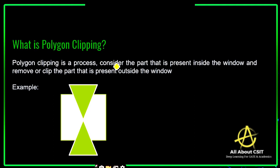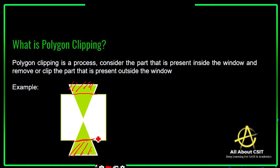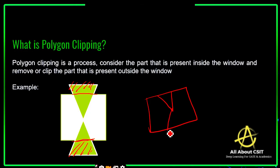Polygon clipping is a process to consider the part that is present inside the window and remove or clip the part that is present outside the window. We need to select only the part inside the window and clip the rest. The part inside the window is accepted, and the polygon present outside the window is clipped. This is the concept of polygon clipping.